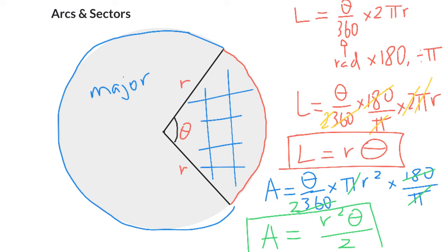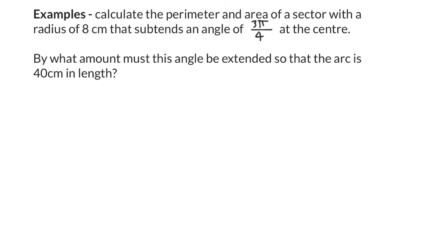Let's have a look at an example. A simple example here, and then one that's got a little bit of thinking to do with it. Our first thing to have a look at is calculate the perimeter and area of a sector with a radius of 8 centimeters that subtends an angle of 3π over 4 at the center.